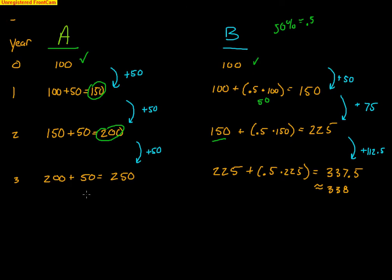In year three, A is going to add 50 new stores again, so they now have a grand total of 250. B is going to add 50% of their total, which is currently 225. 50% of 225 is 112.5, so they now have 337.5 total stores — you could round that to 338. A linear function goes up by the same amount every time: up 50, up 50, up 50.